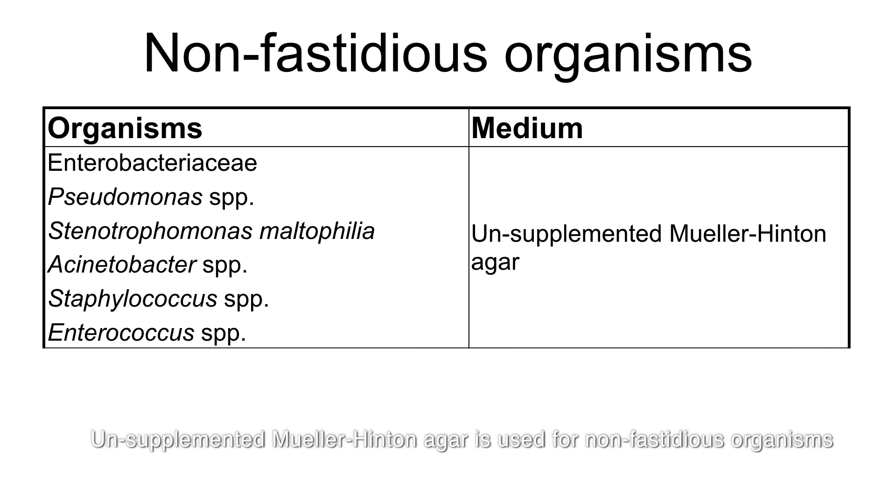Unsupplemented Mueller-Hinton agar is used for non-fastidious organisms such as Enterobacteriaceae, Pseudomonas, Staphylococci, and Enterococci.